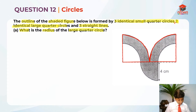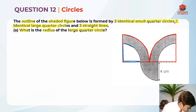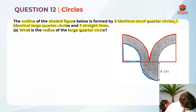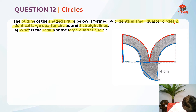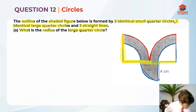They have told us there are three identical small quarter circles, so let me draw those. This blue color line is basically the small quarter circle arc — this is one quarter circle, and this is also a small quarter circle. So the red color is the big quarter circle and the blue color is the small quarter circle.